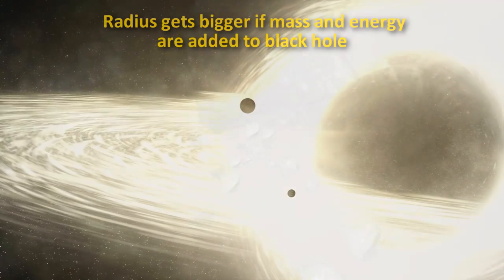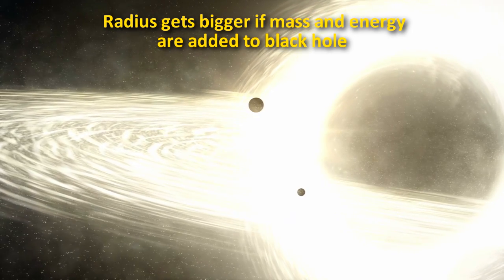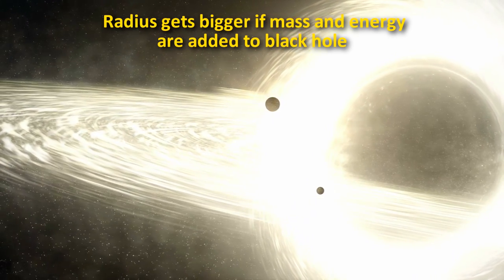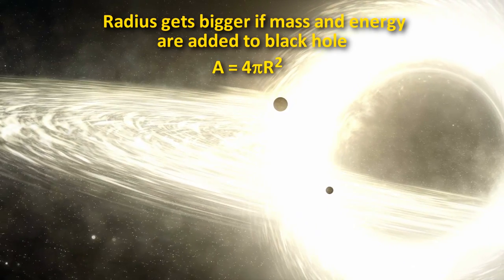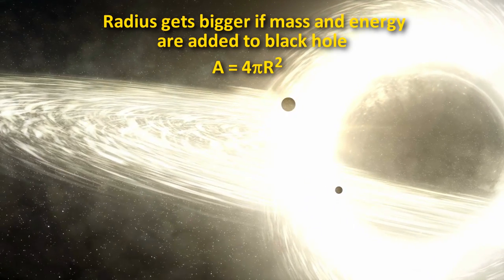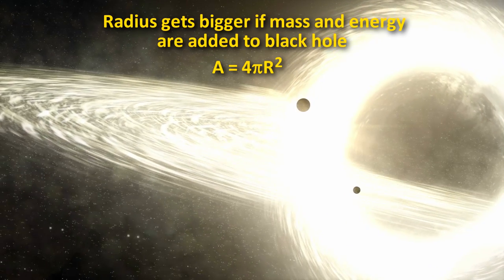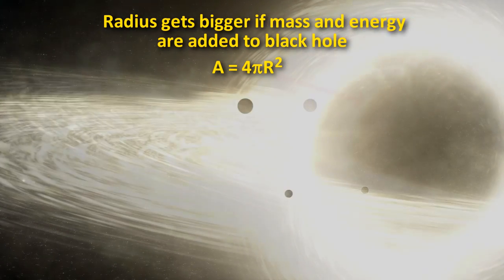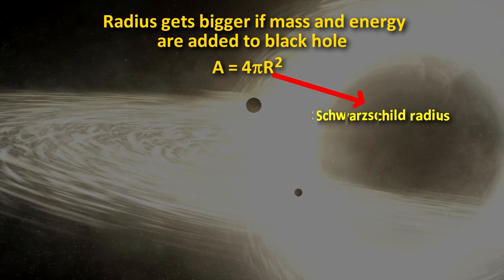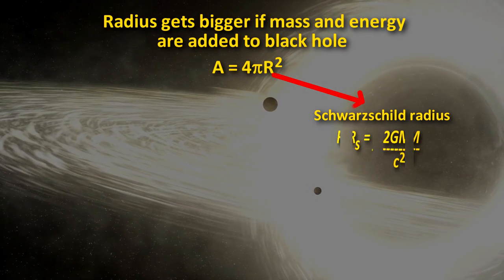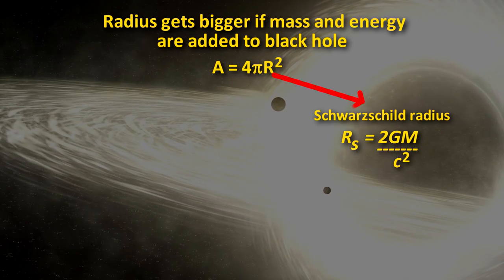If mass and energy are added to a black hole, then its radius should also get bigger. If the radius gets bigger, then its surface area will get large as well, according to the equation A equals 4 pi r squared. This is just the formula for the surface of any sphere. For a black hole, the r in the equation is called the Schwarzschild radius, and this radius is proportional to the mass of the black hole.